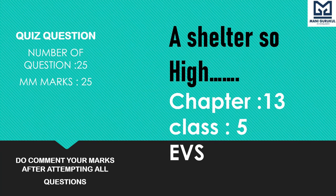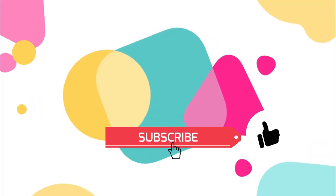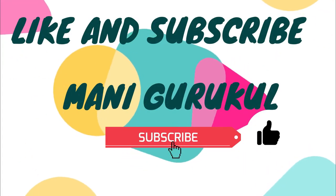Chapter 13, Class 5 EVS: A Shelter So High. Today we will do a Quiz. The number of questions is 25, marks are 25. Do comment your marks after attempting all questions. Do click the Subscribe button.